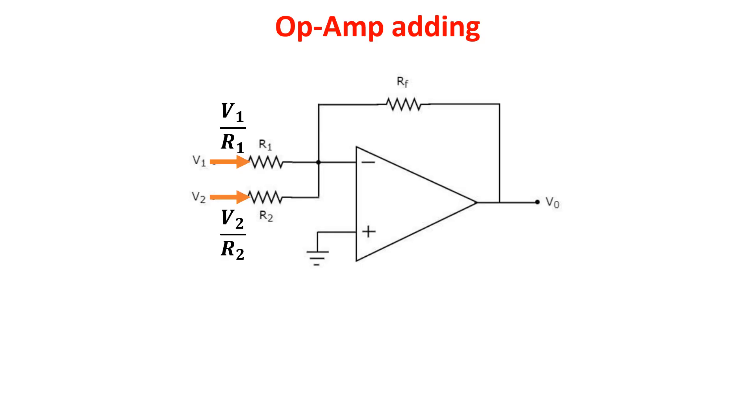So, the current of the feedback is this. The output voltage is the opposite of the voltage dropping on the feedback. So, Vout is equal to minus RF times the current.